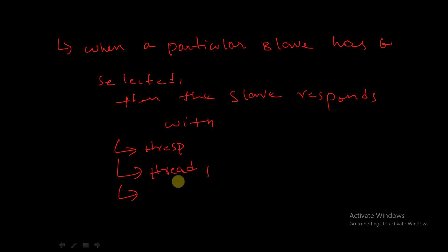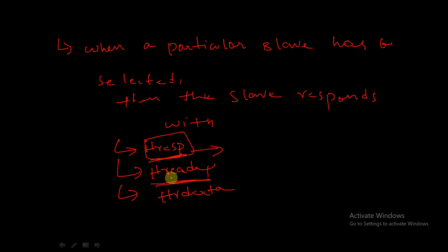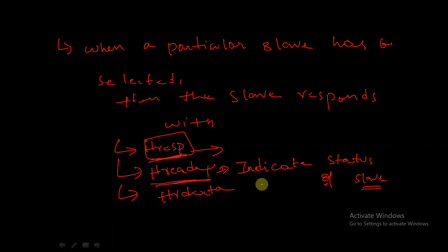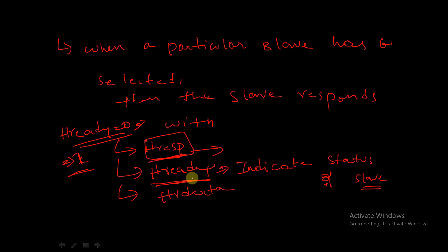When a particular slave has been selected, it responds with three signals: H-response, H-ready, and HR data. H-ready is used to indicate the current status of the slave. When H-ready equals 0, the slave is busy; when H-ready equals 1, the slave is ready to accept data or ready for communication.